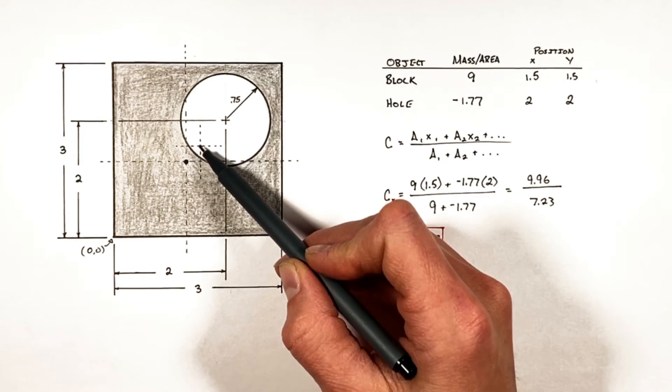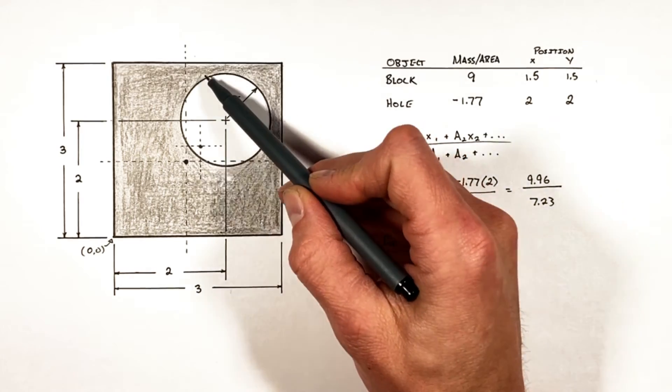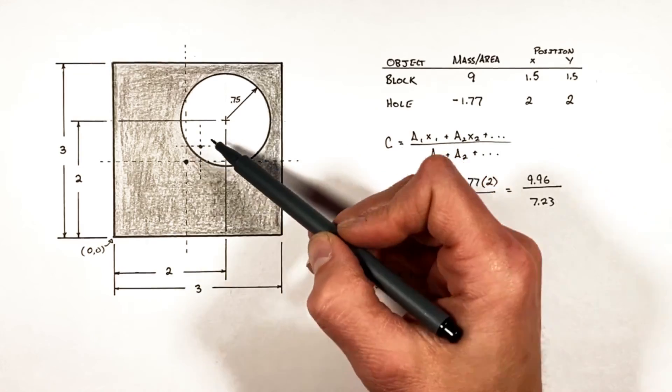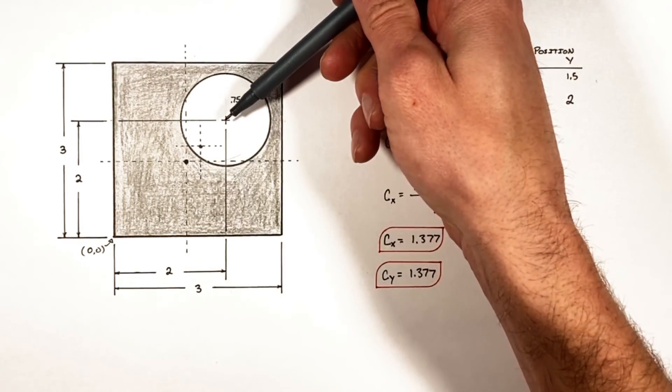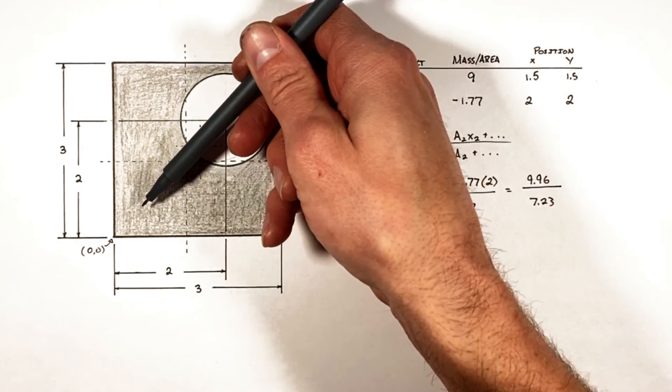Think about it: if we were to remove material from the upper right corner of the block, that's going to shift this center of mass or center of area down and towards the left. That's exactly what we've seen here.